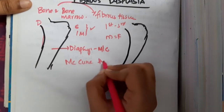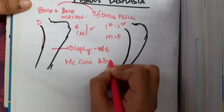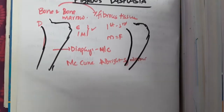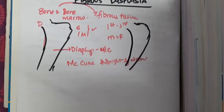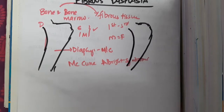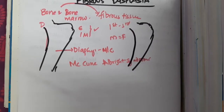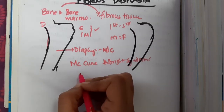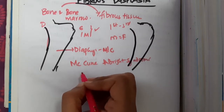Fibrous dysplasia is associated with two syndromes. The first is McCune-Albright syndrome, in which the patient has fibrous dysplasia along with cutaneous pigmentation, precocious puberty, and endocrine abnormalities such as hyperparathyroidism.